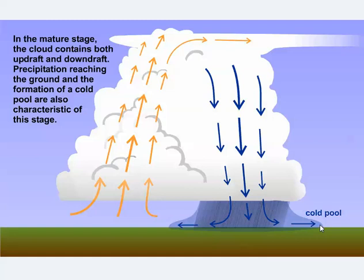The mature stage is really the most intense part of the storm. Updrafts attain their fastest speeds, lightning is most frequent, rain is heaviest, radar reflectivity is greatest, cloud tops are highest, and the glaciated anvil that forms near the tropopause becomes most prominent.